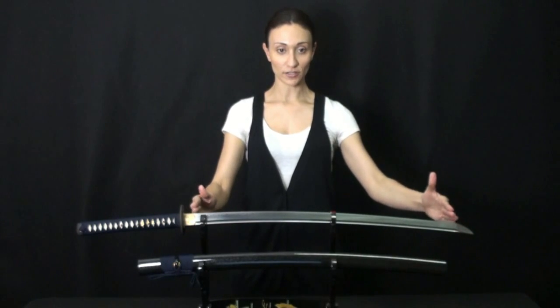The blade material is T10. The Nagasa length is 27.5 inches. The Sori is .564. The weight is 2.2 pounds. The balance point is coming in at 5.25 inches, and the lamination is mono steel.